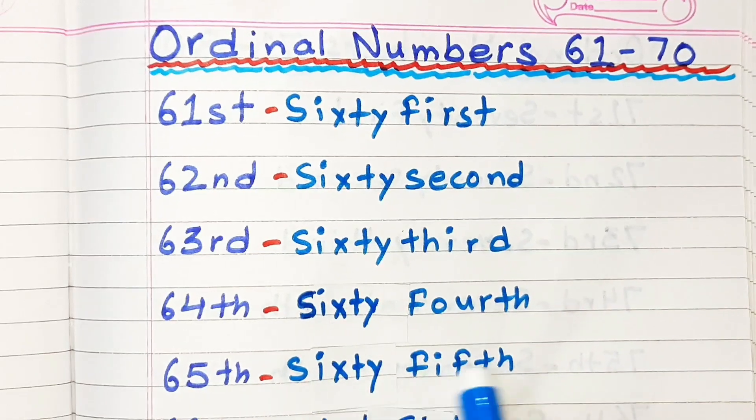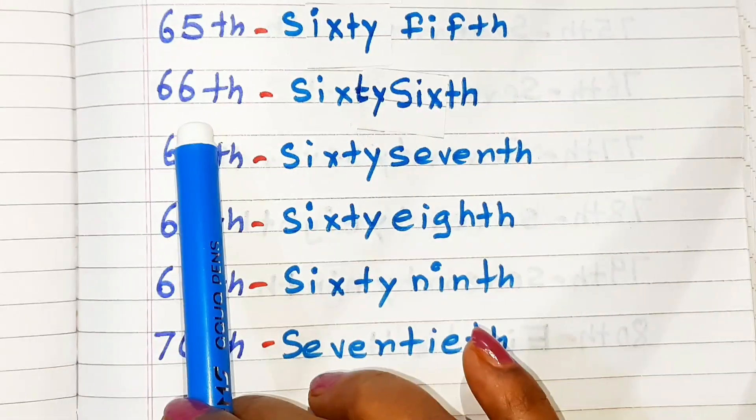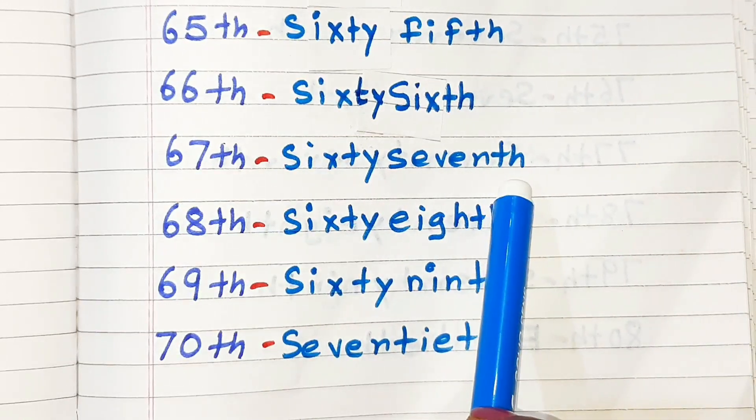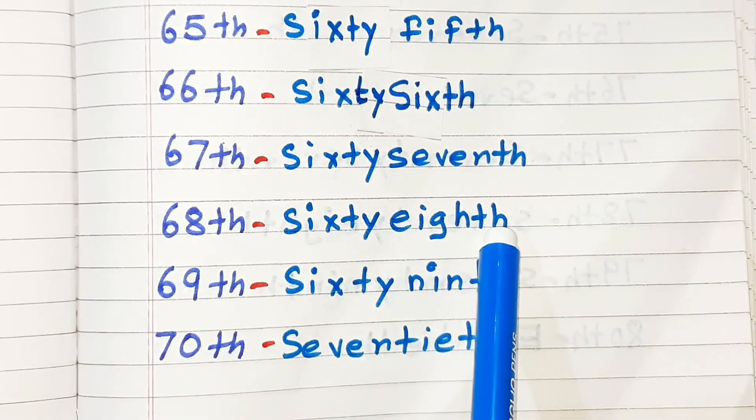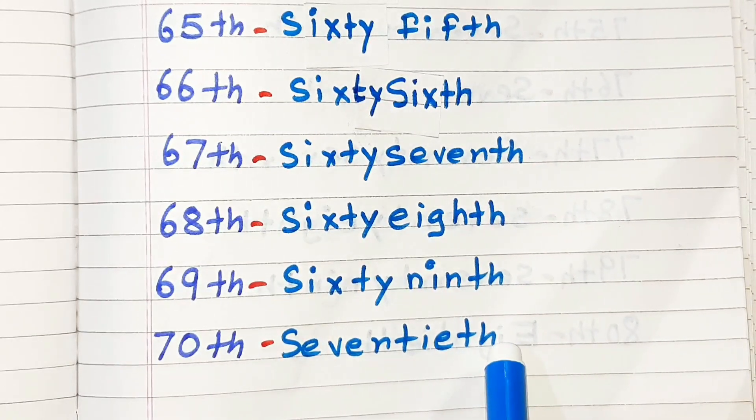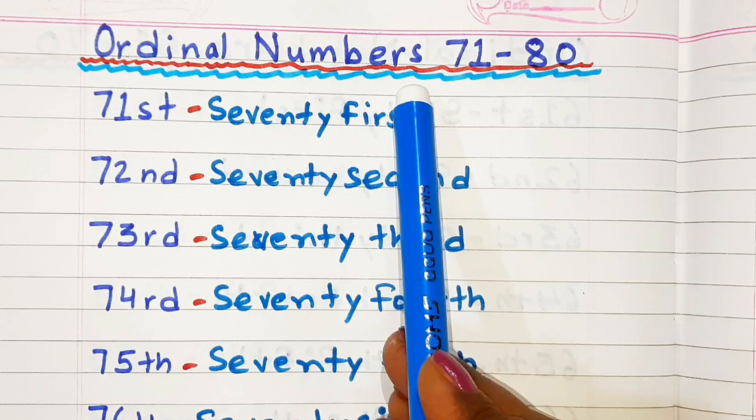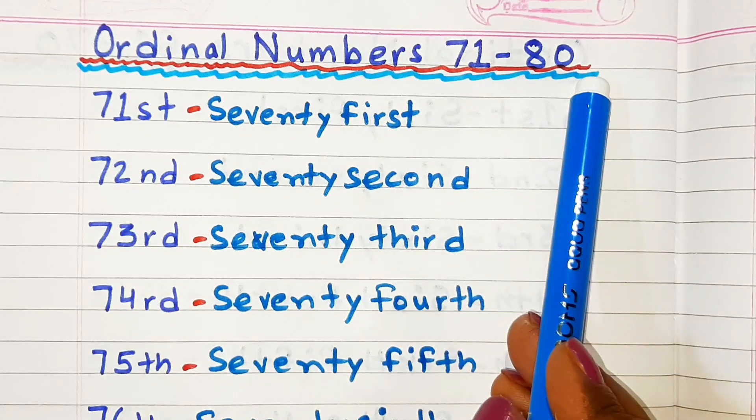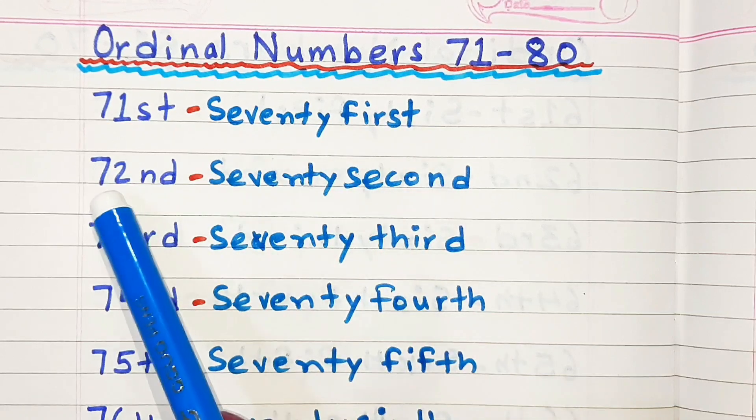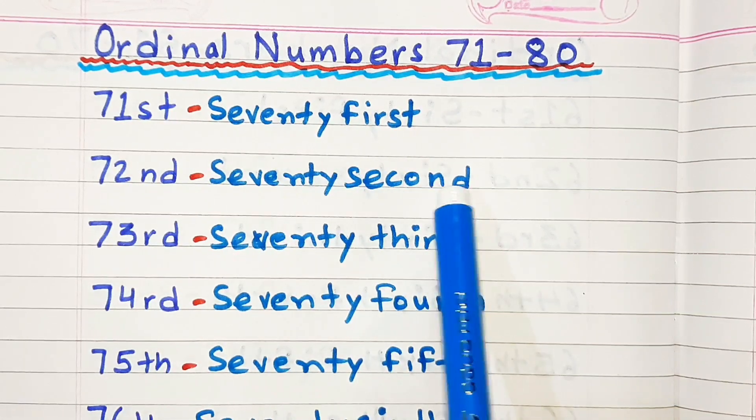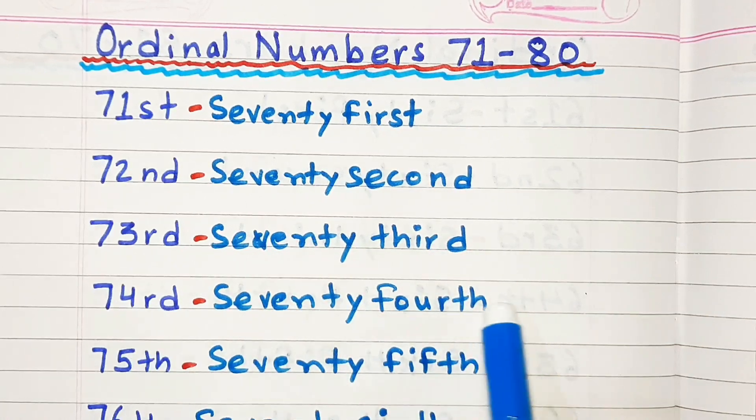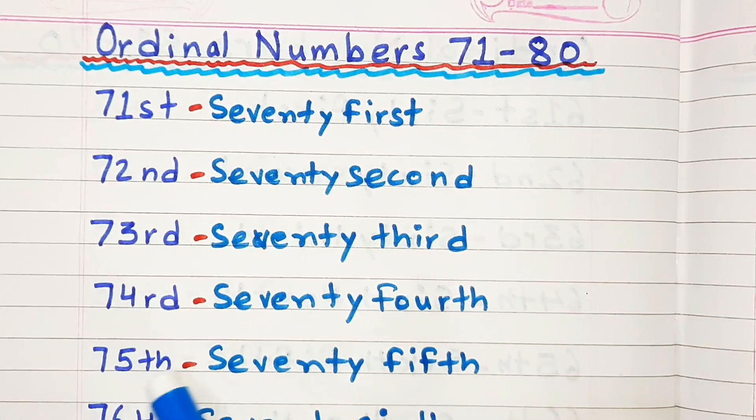Ordinal Numbers Sixty-one to Seventy: Sixty-first, Sixty-second, Sixty-third, Sixty-fourth, Sixty-fifth, Sixty-sixth, Sixty-seventh, Sixty-eighth, Sixty-ninth, Seventieth.